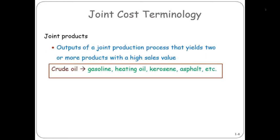A joint product is when you yield two or more products from a single raw material or single process, and those products will all have a high sales value. They may not have equal sales values, but they are all meaningful sales values — they're all more than scrap, they're all more than byproducts. Those would be joint products.